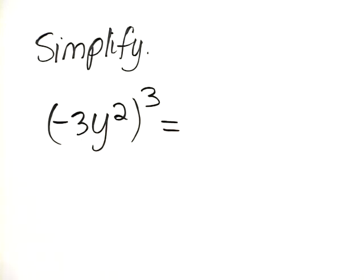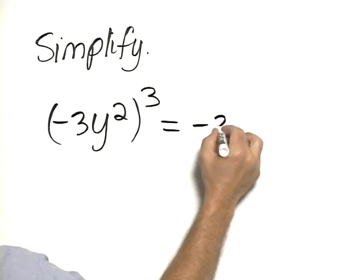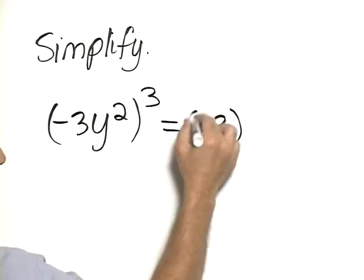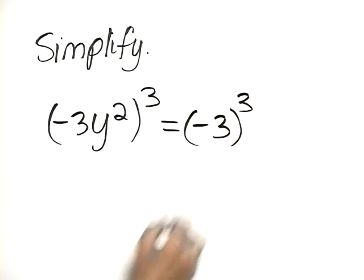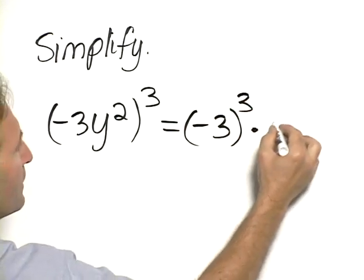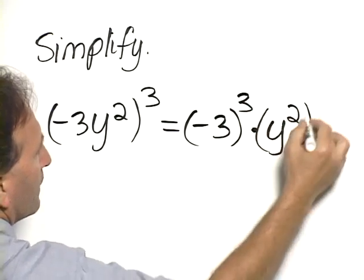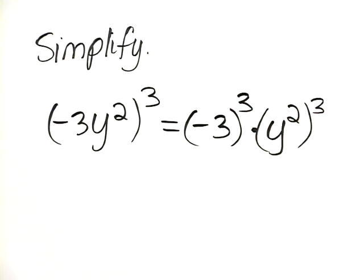In other words, this is equal to negative 3 cubed times y squared cubed.